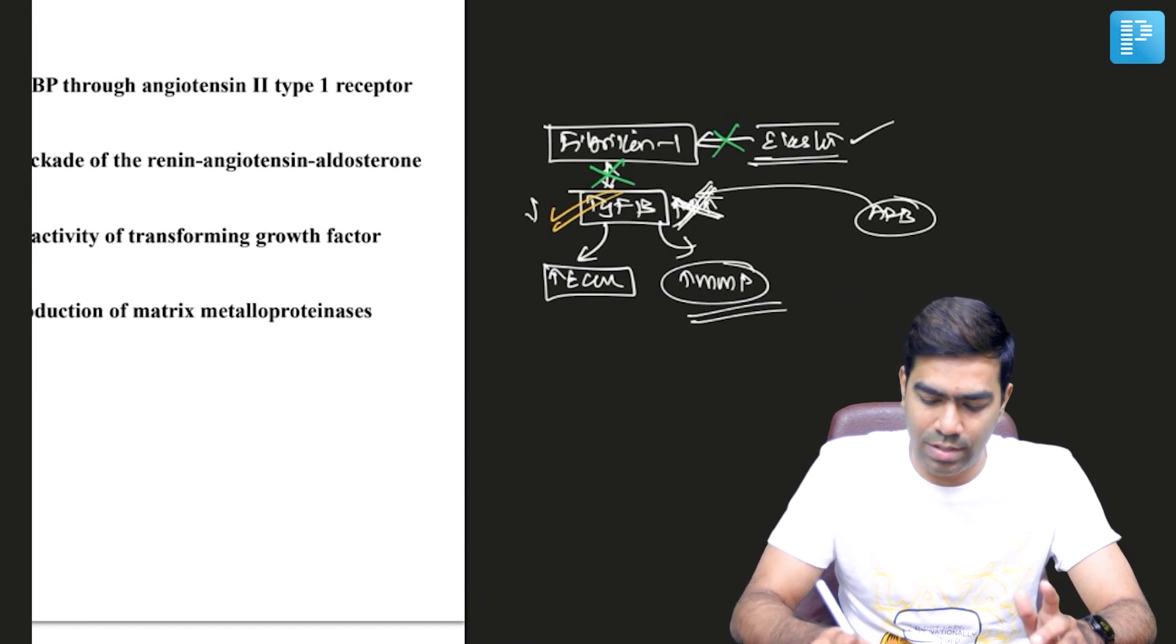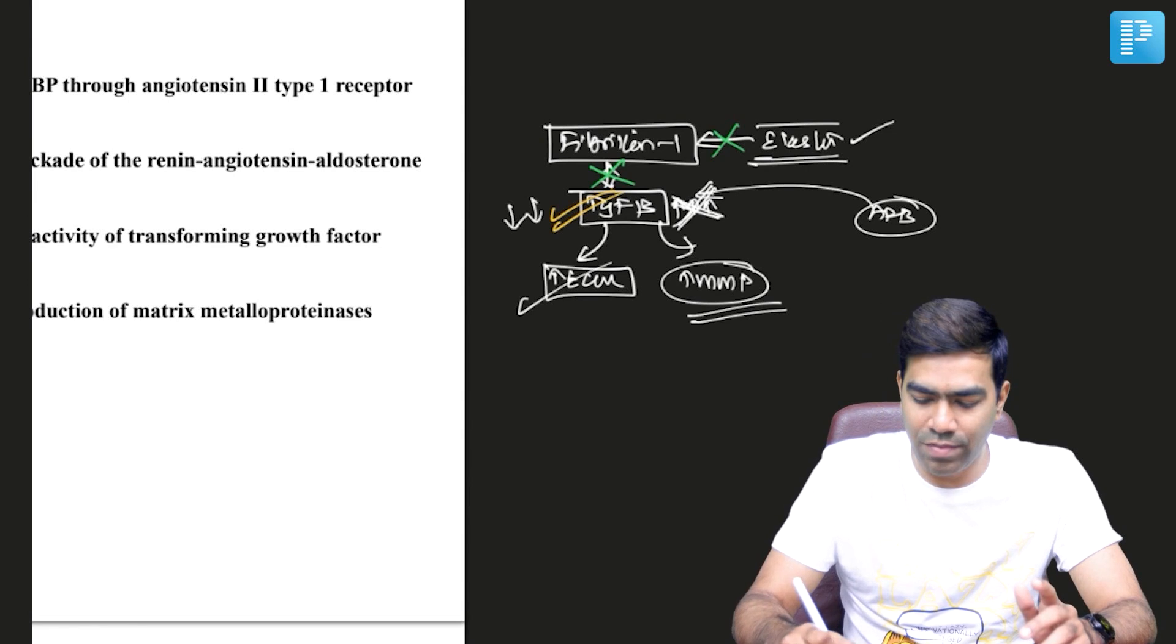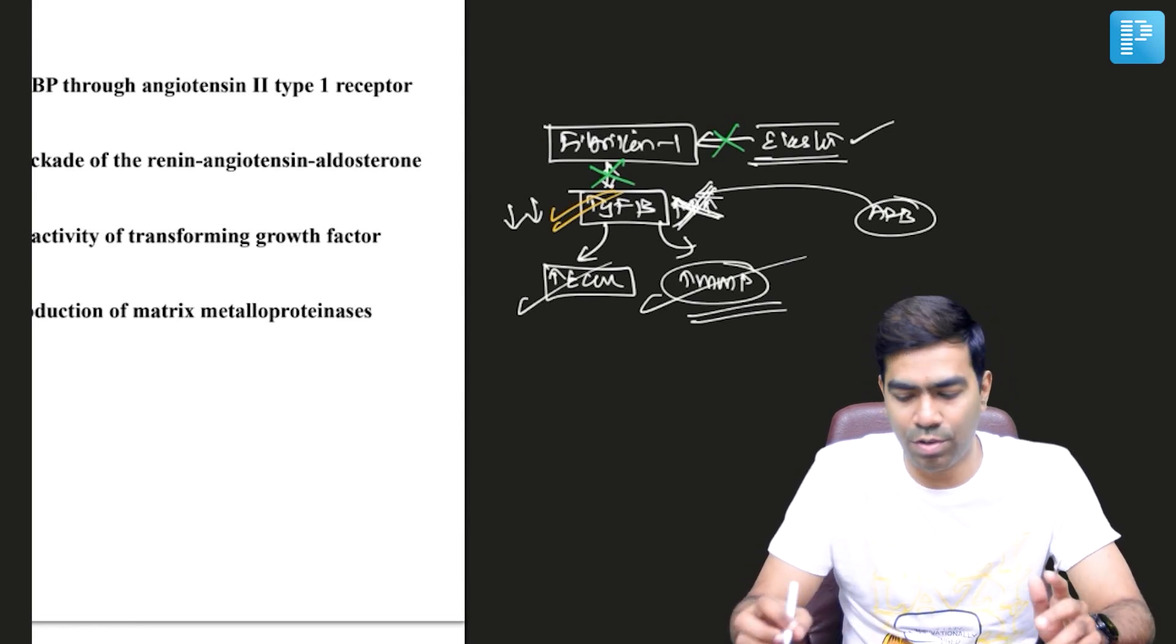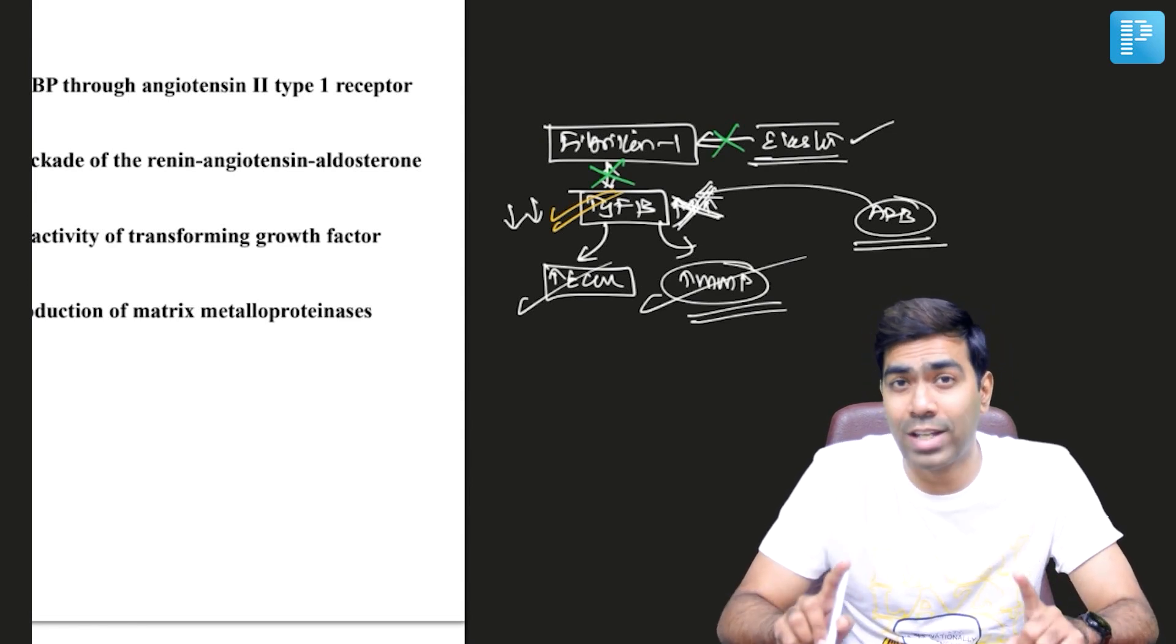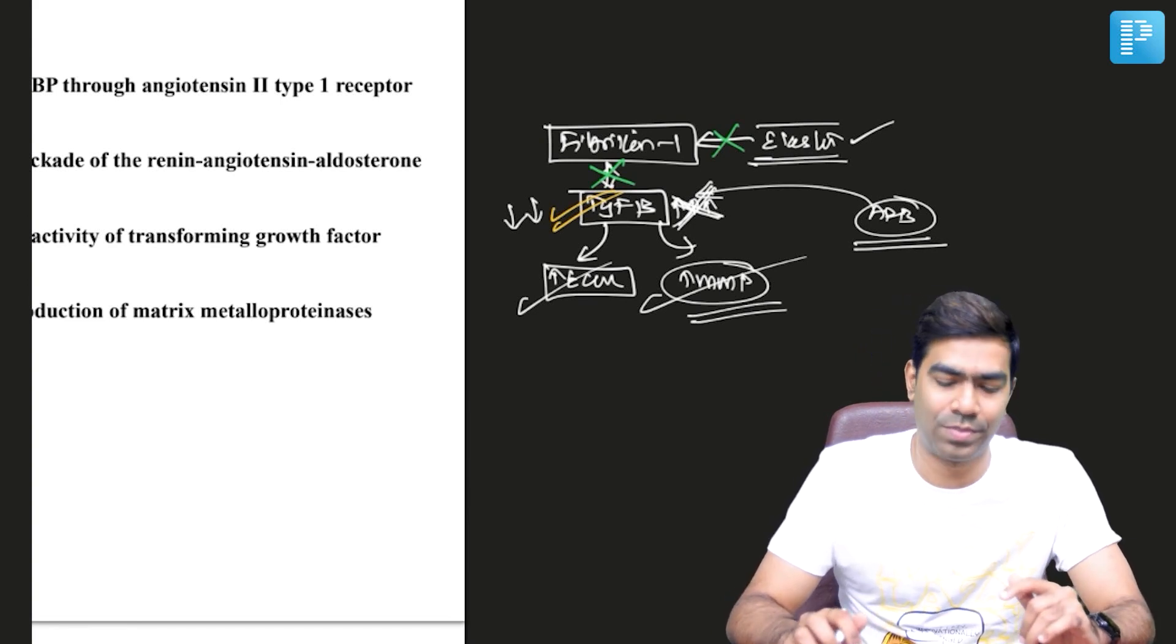That's why it can have beneficial effect in patients with Marfan syndrome. Remember, it's ARBs and not ACE inhibitors that are going to be beneficial in patients with Marfan syndrome. So the right answer for this question is going to be option number C.